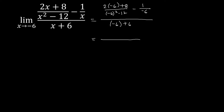Simplifying: 2 times negative 6 is negative 12 plus 8, over negative 6 squared which is positive 36 minus 12. And we have negative 1 over negative 6, which leads to a positive, so plus 1 over 6. And negative 6 plus 6 is 0. Simplifying the numerator: negative 12 plus 8 is negative 4, over 36 minus 12 which is 24. And that plus 1 over 6, all over 0.